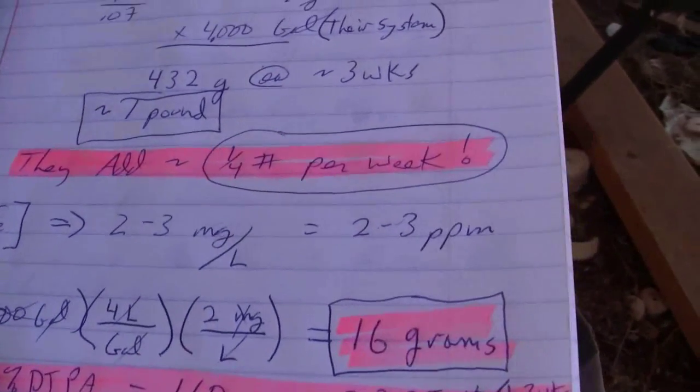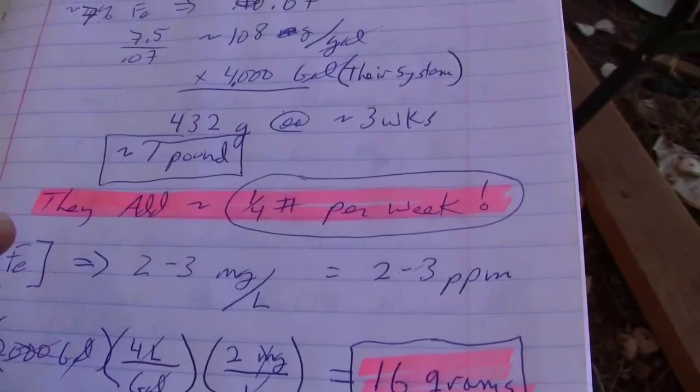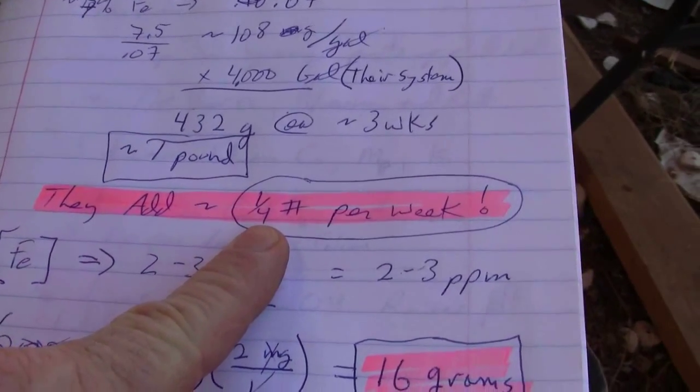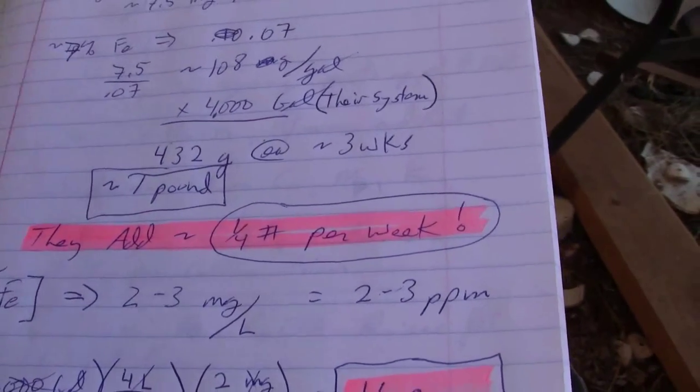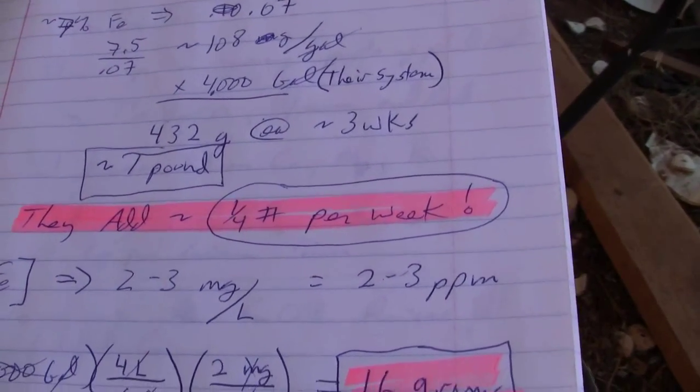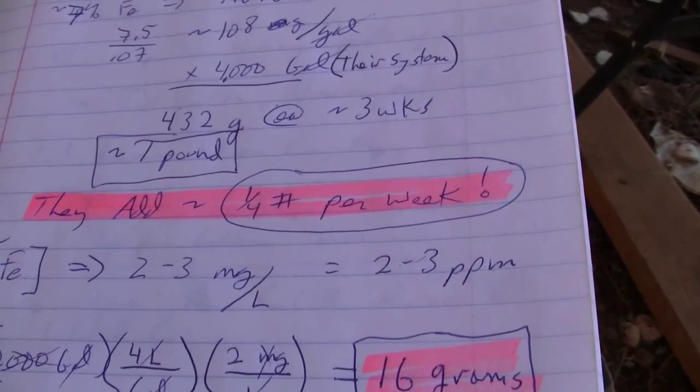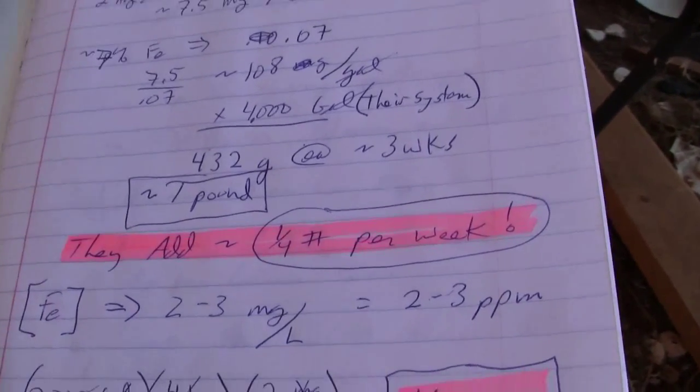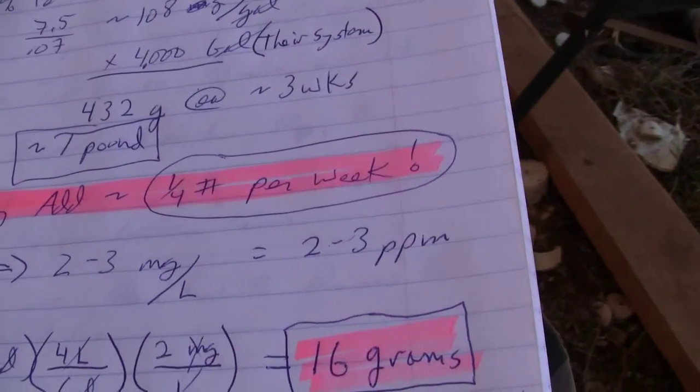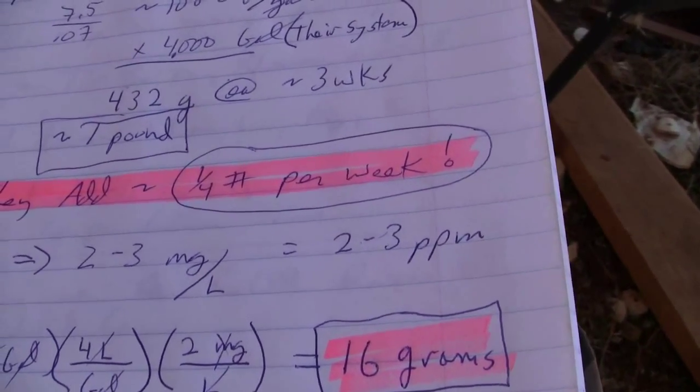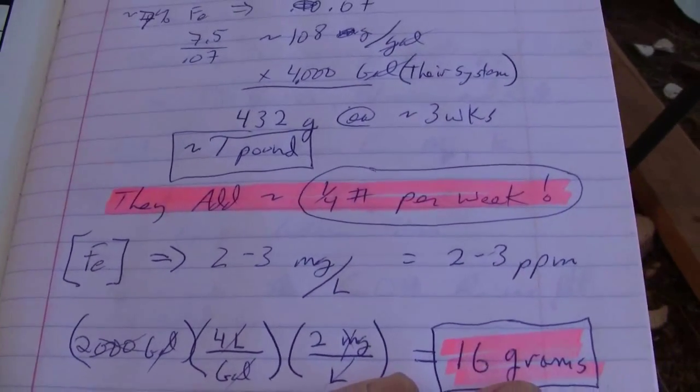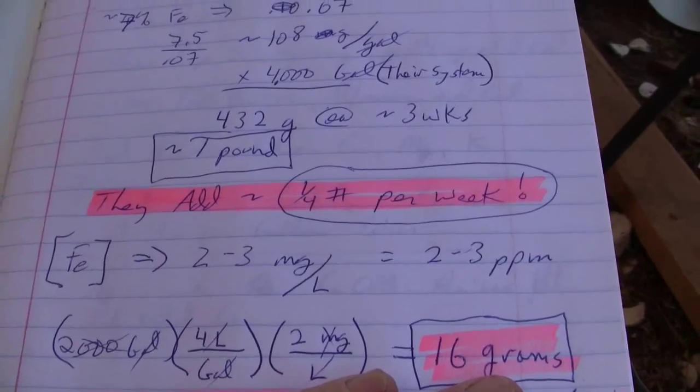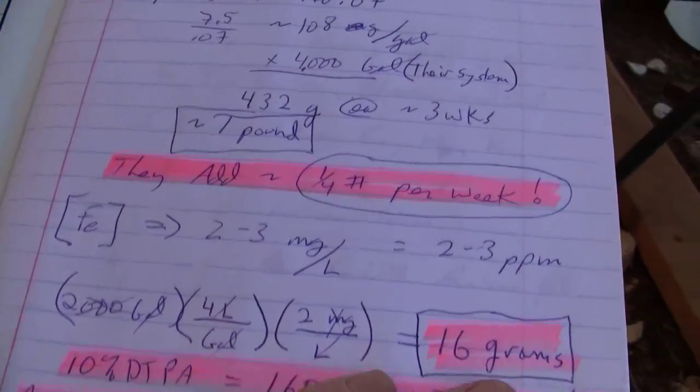Bright Agrotech, a little up north of us, says they add a quarter of a pound per week. They have a 4,000 gallon system. You could do the ratio, but be careful. The thing that's important is how many plants you have, not how many gallons of water. If you had 4,000 gallons and only one plant growing, you do not need a quarter of a pound per week. Likewise, if you have a huge greenhouse full of plants and a really tiny reservoir of just a couple hundred gallons, you might need more than that per week.